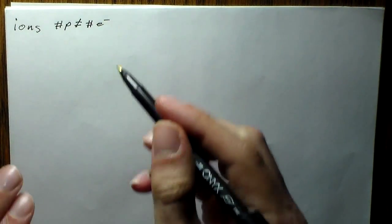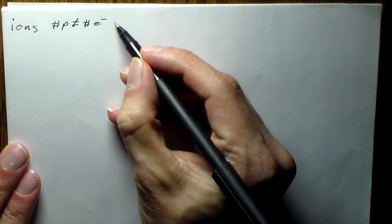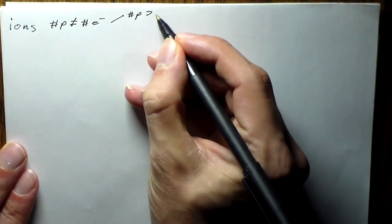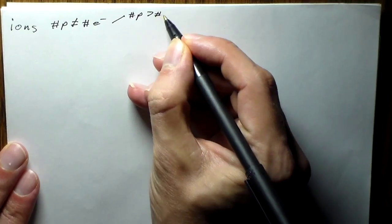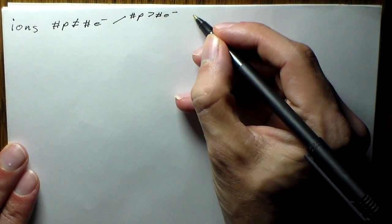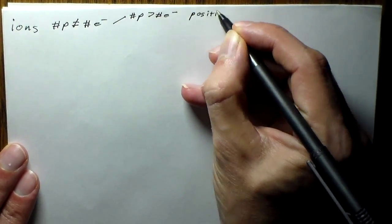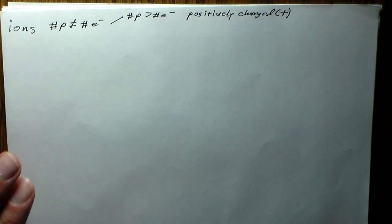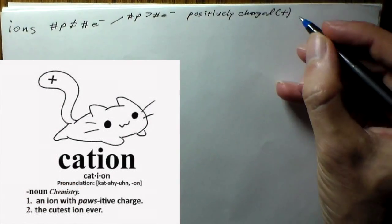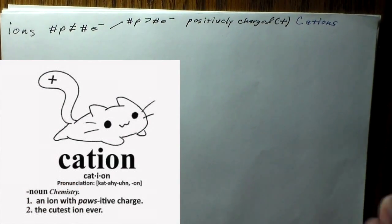There are two possibilities for ions. One is that the number of protons is going to be greater than the number of electrons. In this case, this is going to be positively charged. These are called cations — so these are positively charged, and they're called cations.